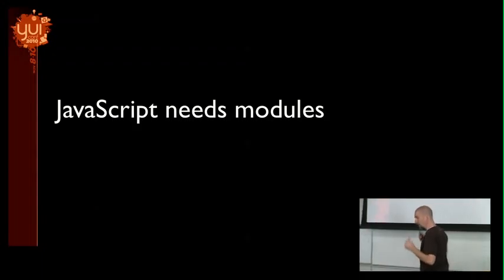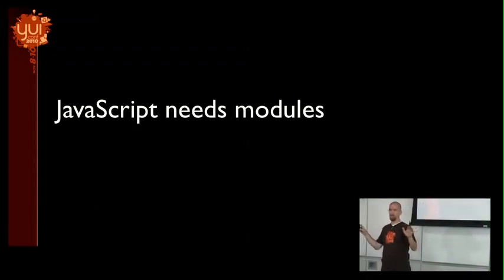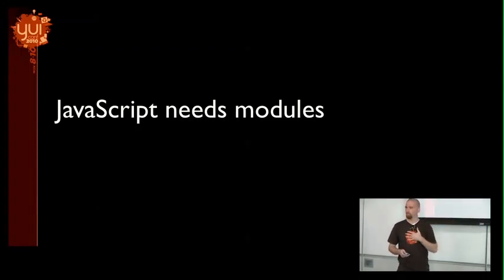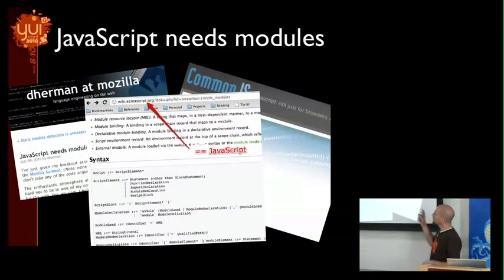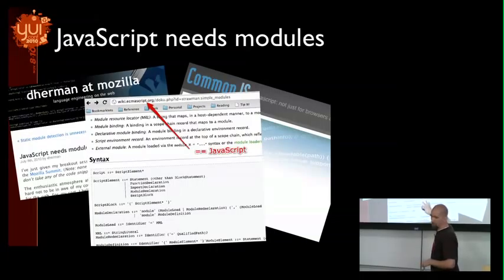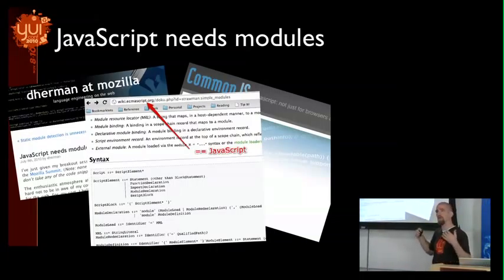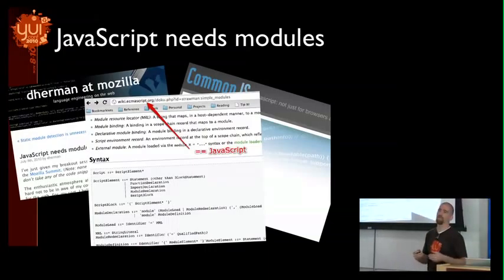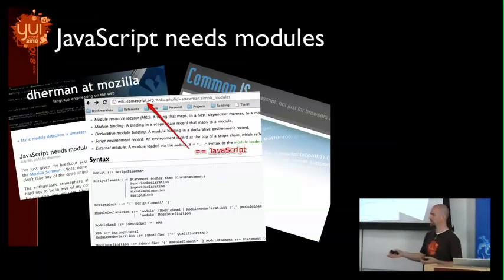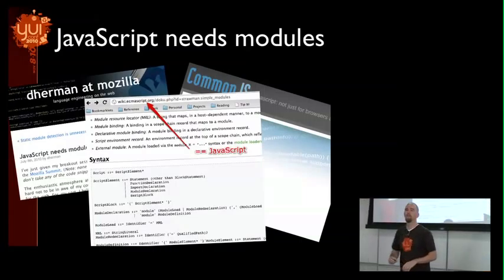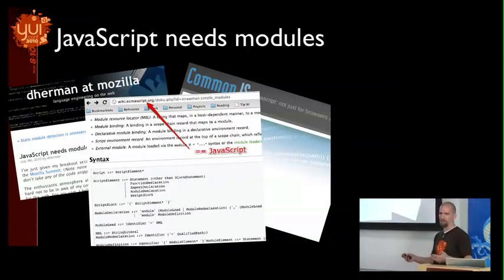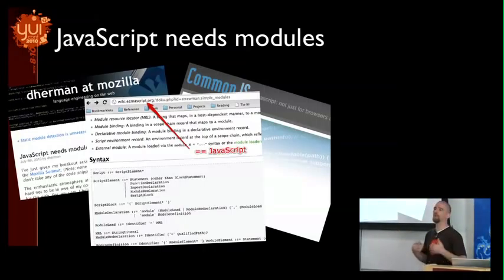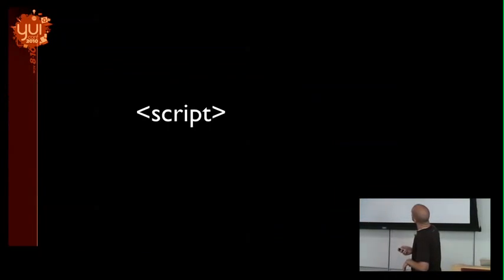A little context: JavaScript needs modules. It's not just the YUI team saying that — a lot of very important people are saying that, including TC39. This is the current straw man for the definition of modules as part of the language, planned for harmony, the next upcoming version of ECMAScript. So it's not really a question of whether modules are a good idea or whether they should be added to the language. The question is really how. They make sense as the next step for how to code against the language.